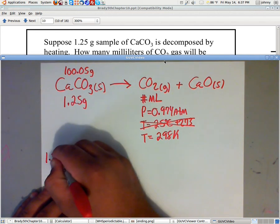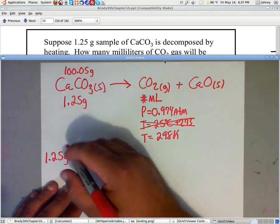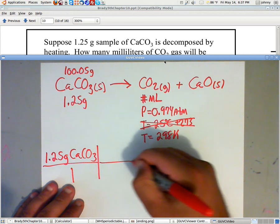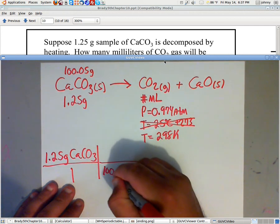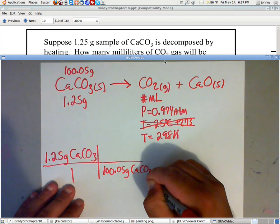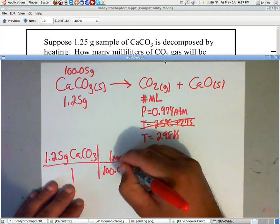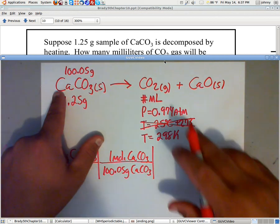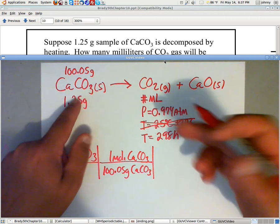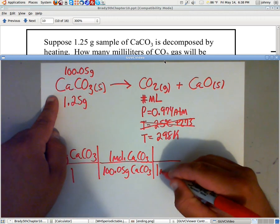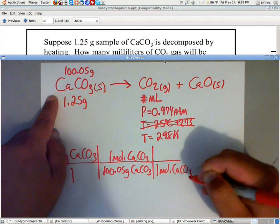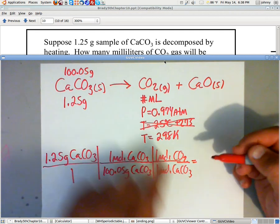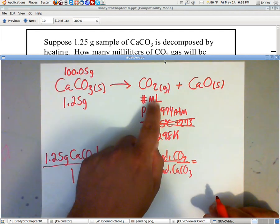We have 1.25 grams of CaCO3, put that over 1. Now, the molar mass of this will be down here, 100.05 grams of CaCO3, and that's in 1 mole. Cool. Now, let's look at the balanced equation. Notice that it is balanced all the way through, so we don't have to worry about that. We've got 1 mole of CaCO3 there, and we've got 1 mole of CO2 there. So, and that's what we need, we need moles of CO2 here. I know it says milliliters, but we'll get to that in just a second.